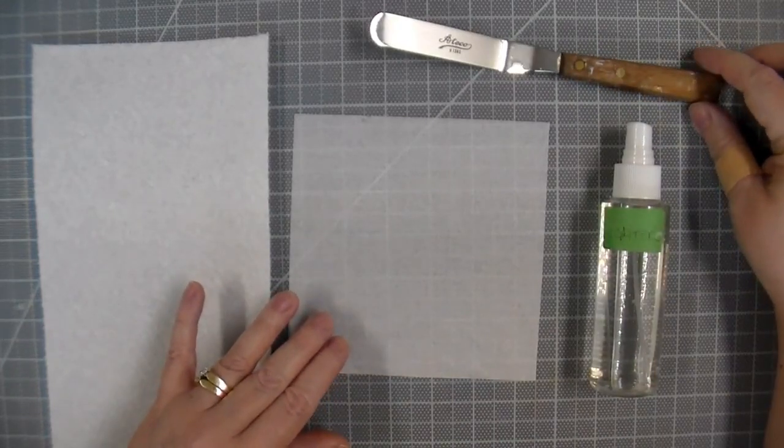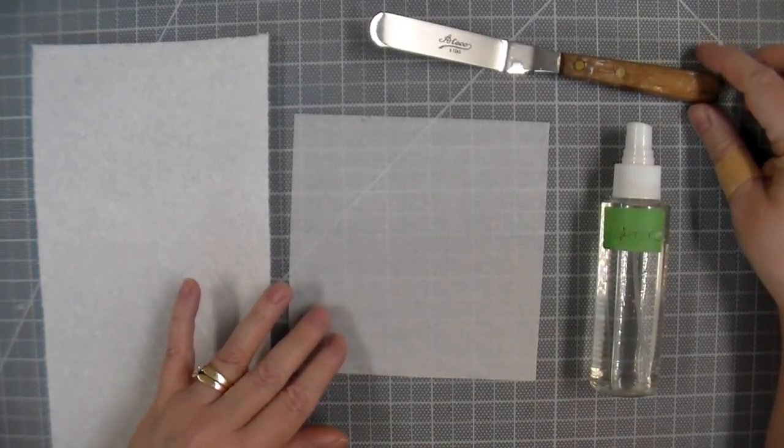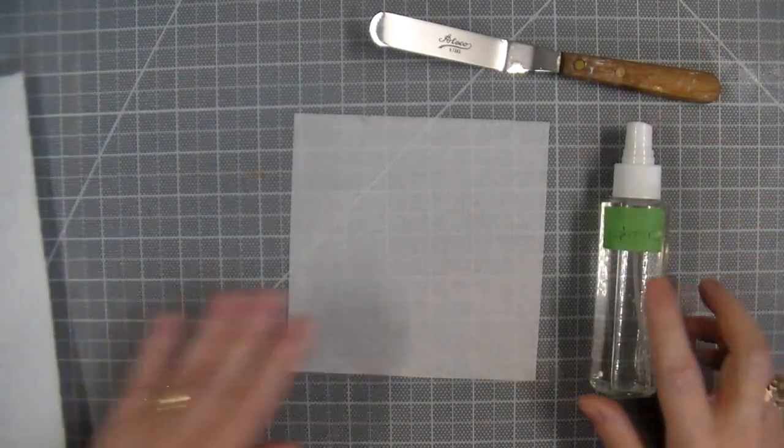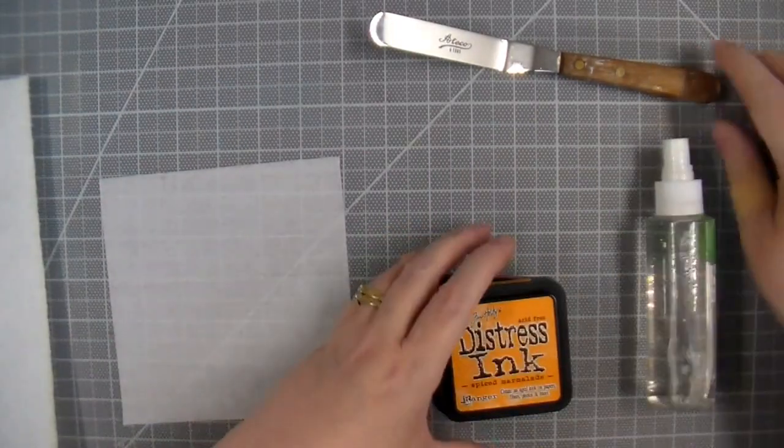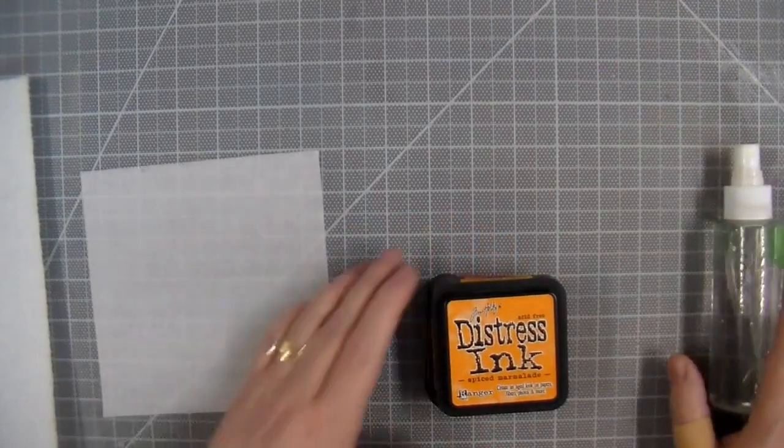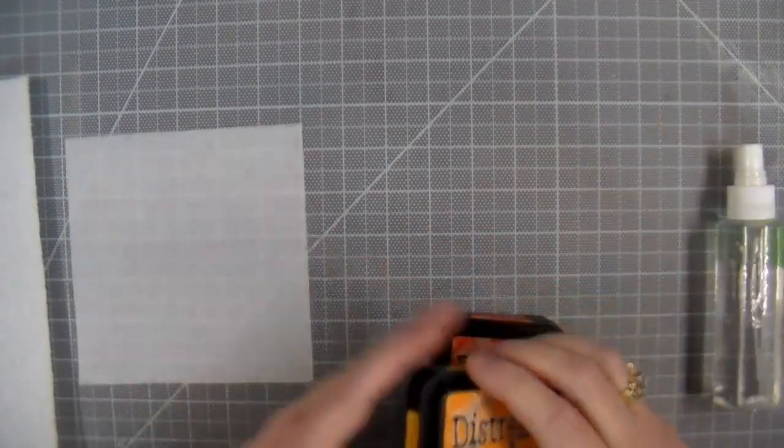Now you can use just about any color medium to color your tissue paper, as long as you can dilute the medium with water. So I'm going to start out with Distress Inks. And the procedure is the same no matter what color medium you're using.